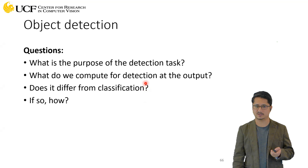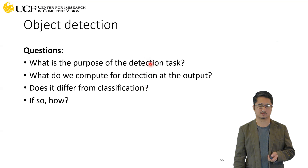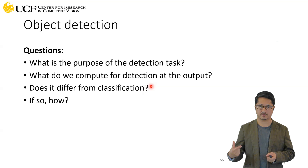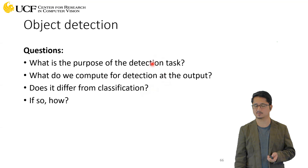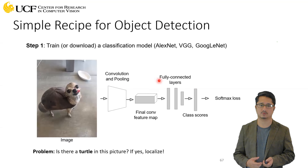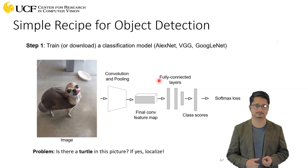Given the differences between classification and detection, think about what kind of output we will require from our architecture to solve detection instead of classification. For sure, we need a classification head because we have to identify which object is present. In addition, since we also need to localize, we need more predictions from the network corresponding to those detections.